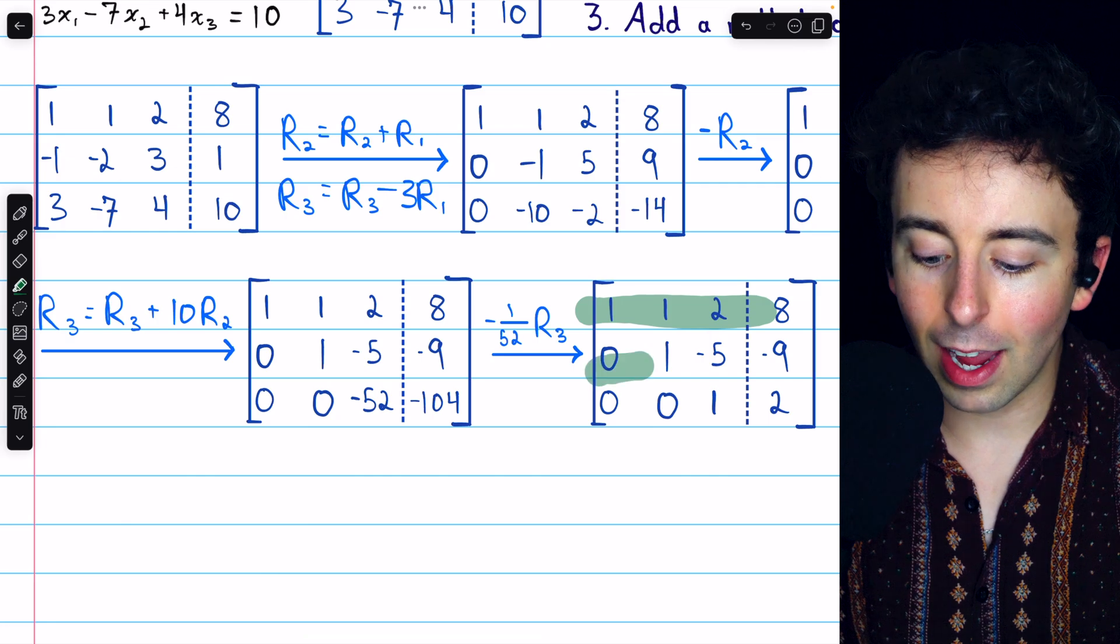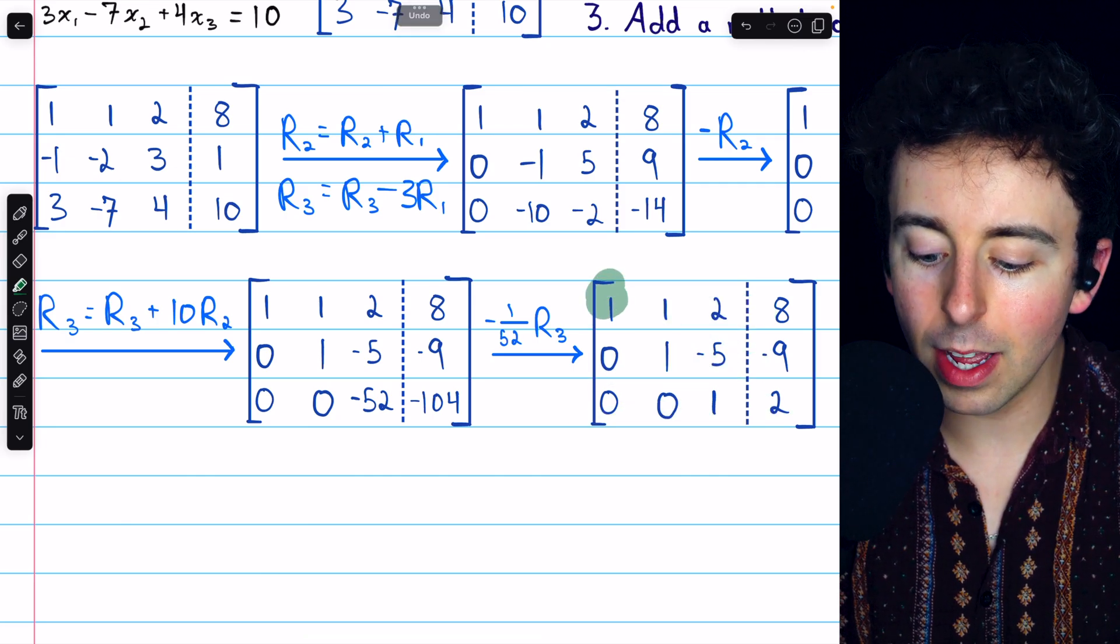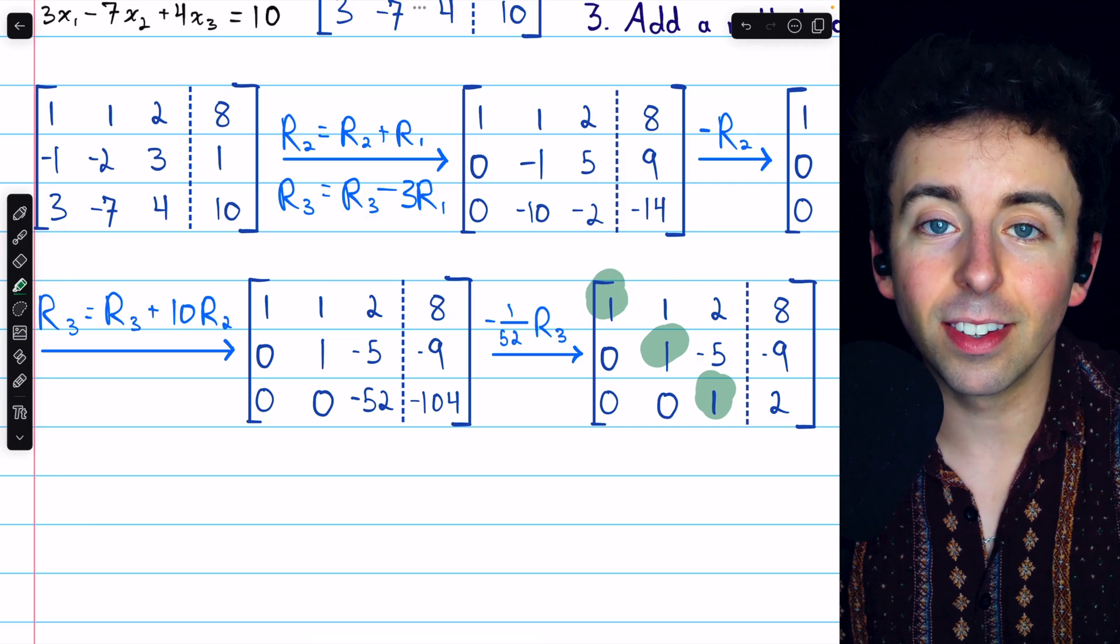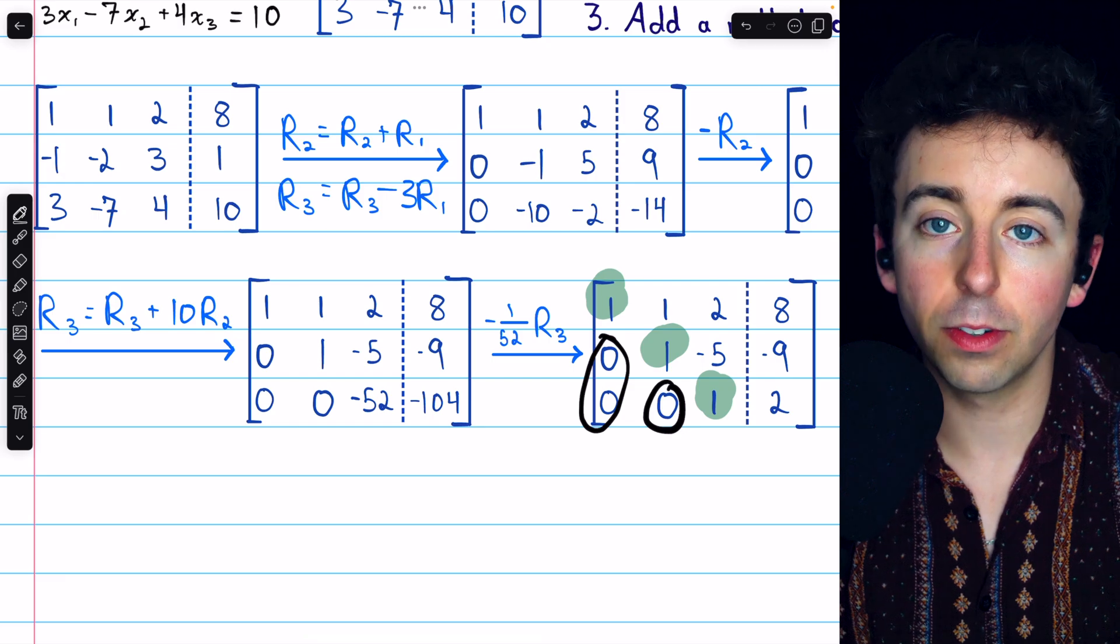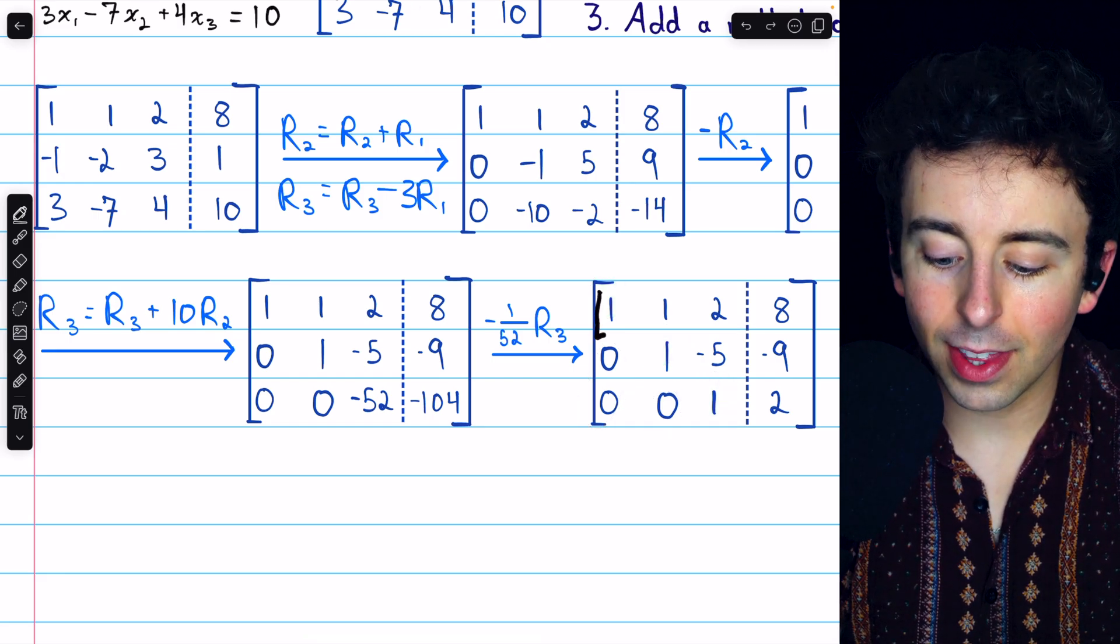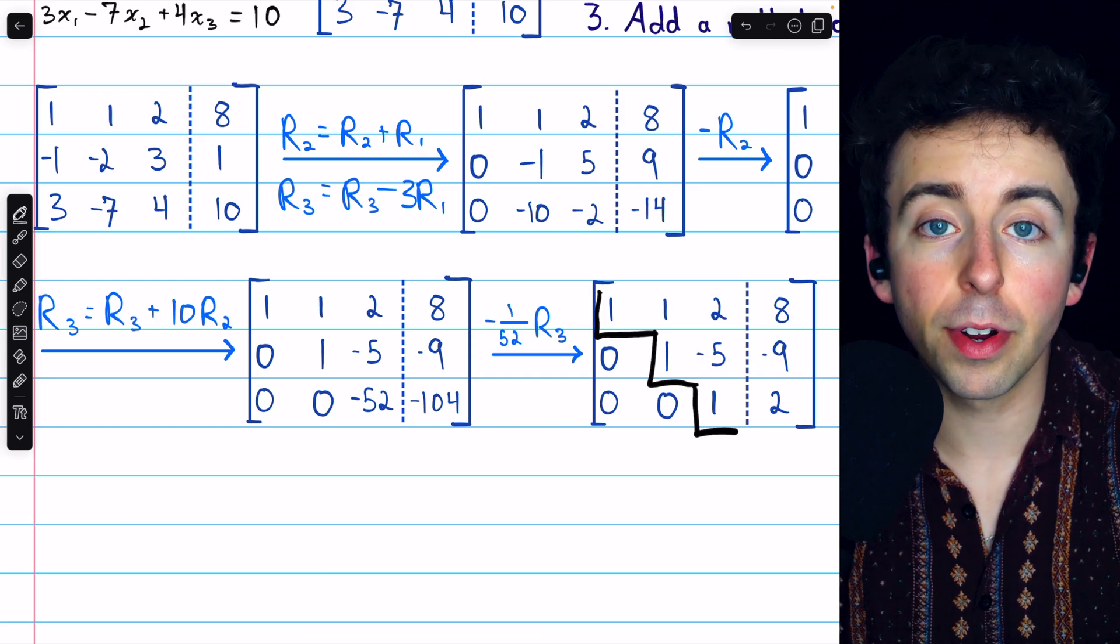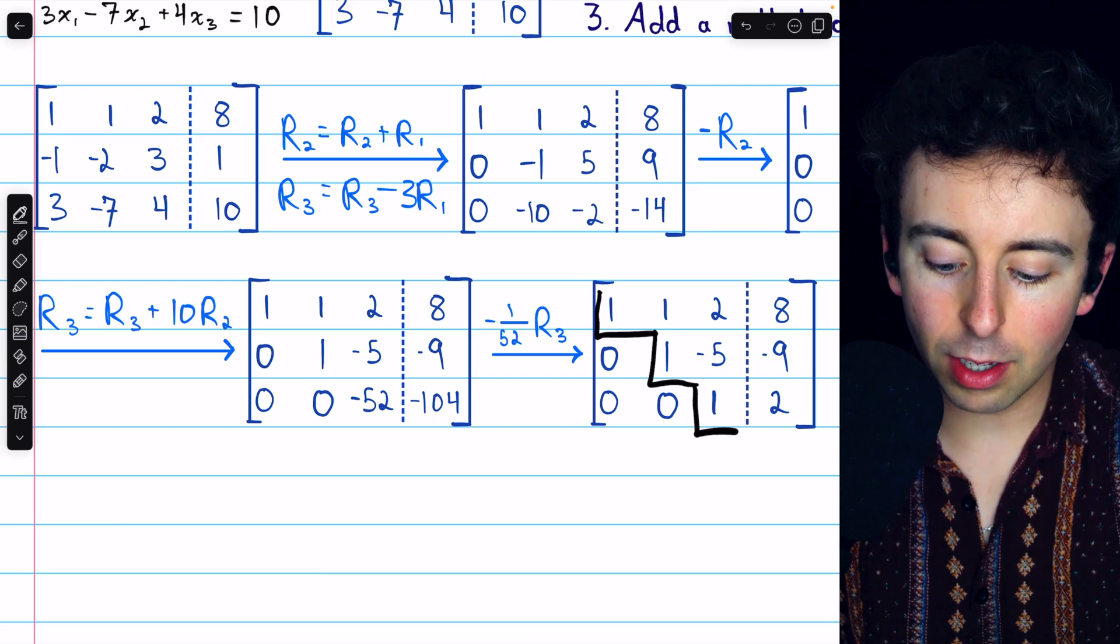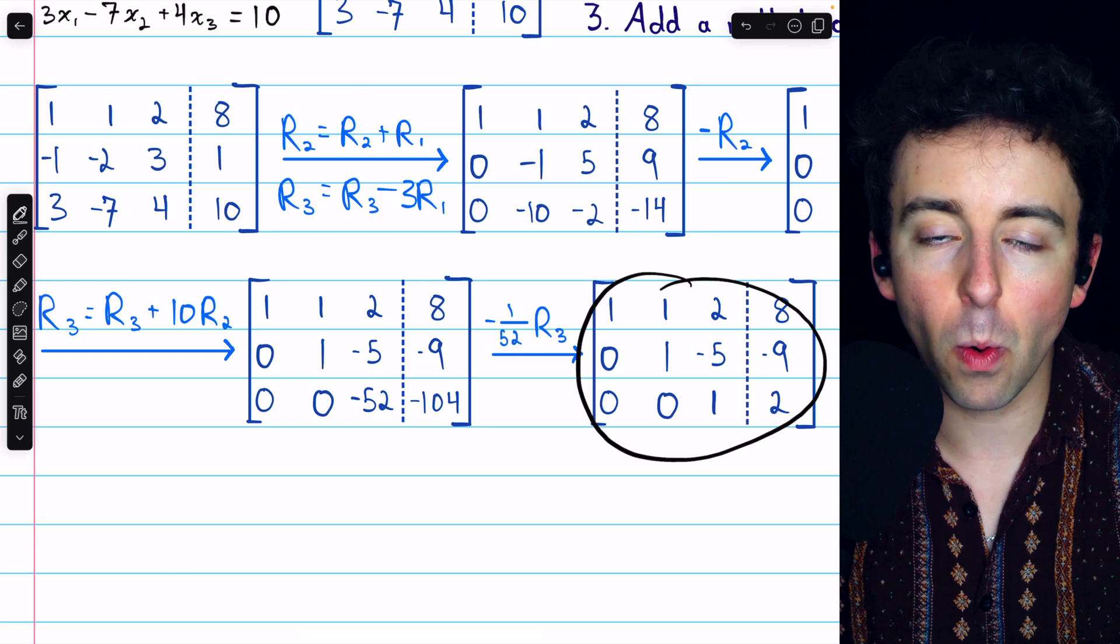Each row in this case happens to be non-zero. So each row has positive 1 as its first non-zero entry. And all of those leading 1s have 0s below them. We also have it that each leading 1 occurs to the right of the previous leading 1. So this matrix is now in what we call row echelon form.